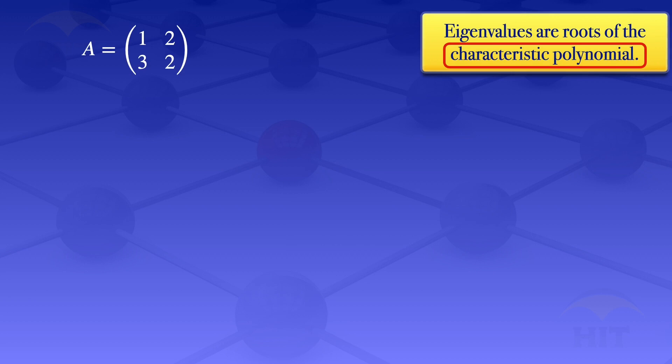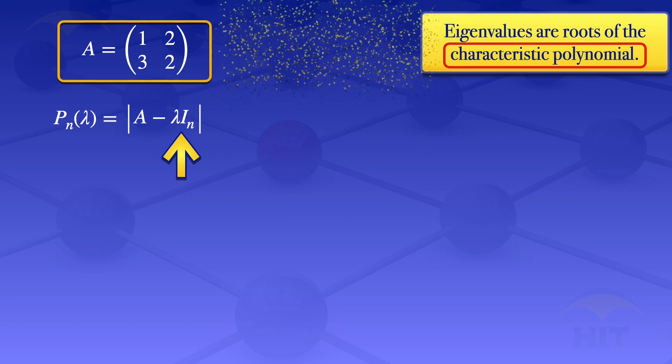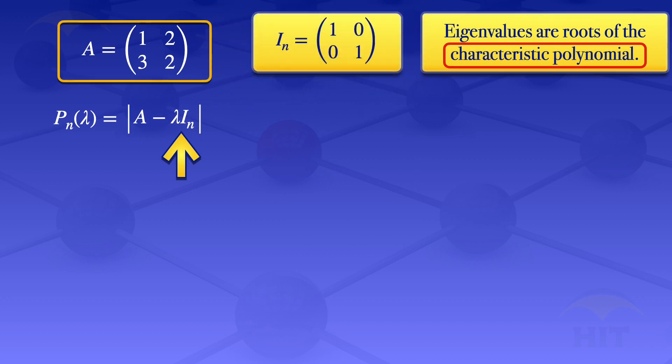By definition, the characteristic polynomial is the determinant of A minus lambda I_N. That I_N would have the same size as the matrix that is given. In this case, our matrix A is a 2 by 2, so our identity matrix will be the 2 by 2 matrix, which has 1s on the diagonal.